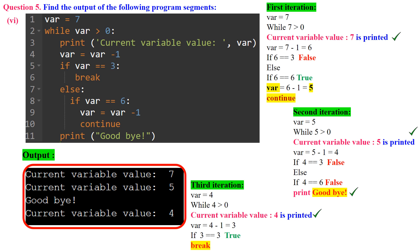Second iteration: var=5 is printed, var decremented to 4. The if checks var==3 — it's not. In the else block, no condition matches, so 'goodbye' is printed. Third iteration: var=4 is printed, var decremented to 3. Now the if condition var==3 is met, so the break statement exits the loop. The output can be checked on the console.